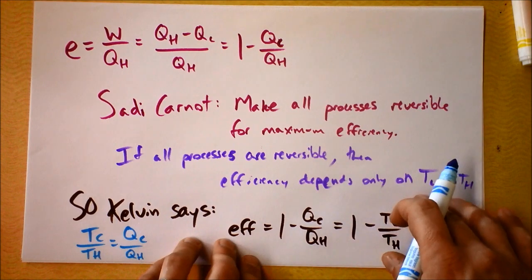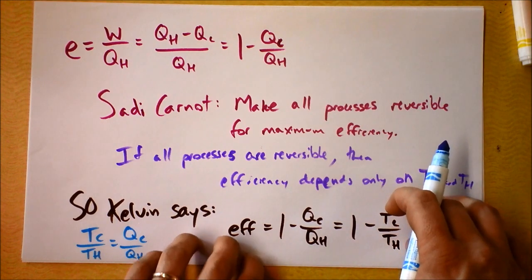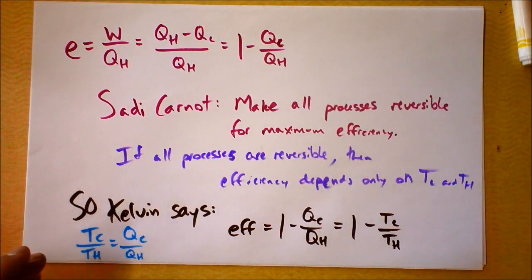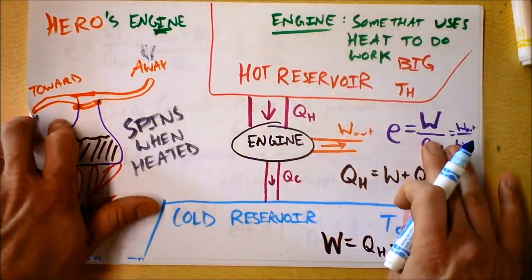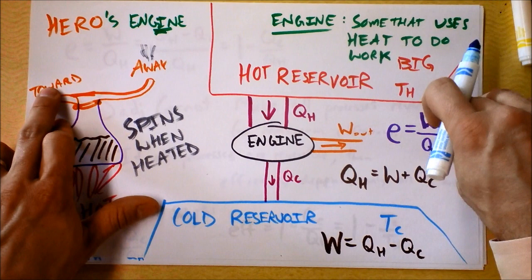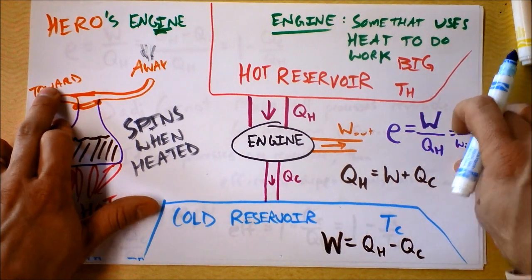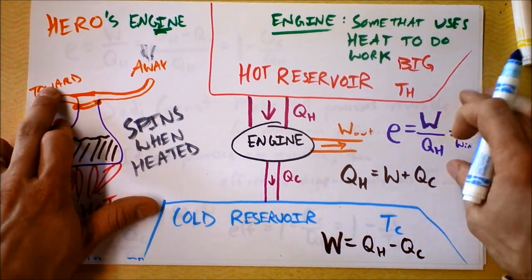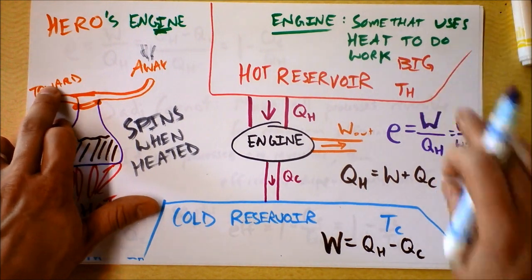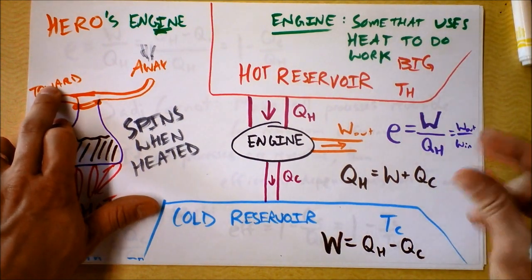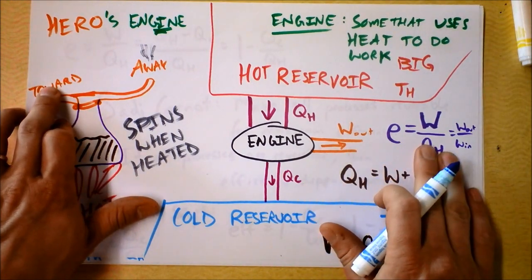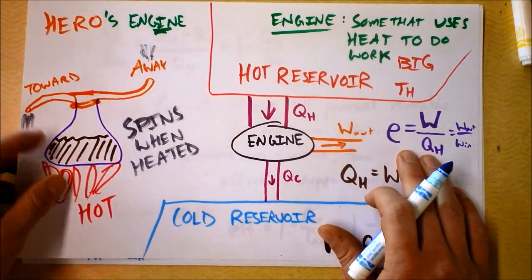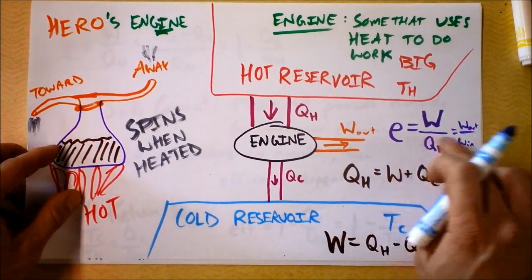You also might agree that if I had this engine here, this engine could be less than maximally efficient. This is the most efficient it can possibly be, so every step needs to be reversible. But in principle, that is incredibly slow to do things reversibly. You've got to speed things up if you want to drive a car, so you make efficiency sacrifices.